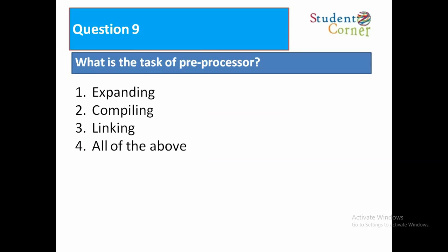Question 9: What is the task of preprocessor? Option 1: Expanding. Option 2: Compiling. Option 3: Linking. Option 4: All of the above. The answer is expanding. The reason is that using the preprocessor, we are calling header files available in the C library or user-defined header files into our program. This will be explained in chapter 1, Introduction.